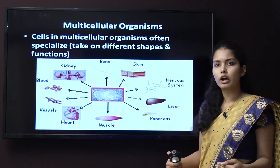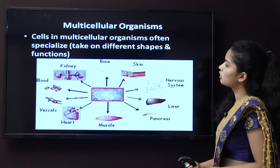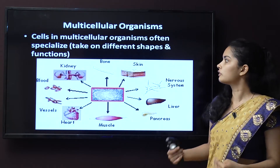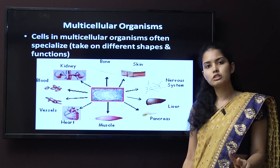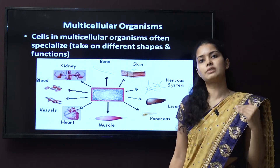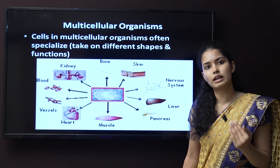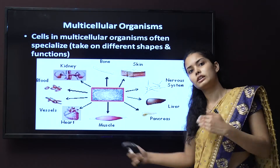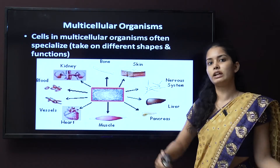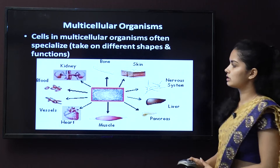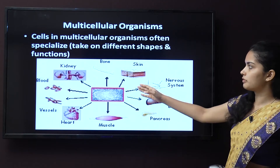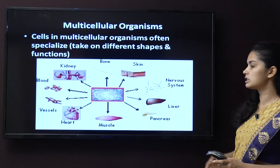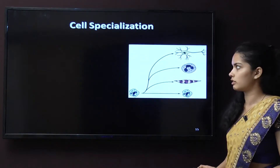In multicellular organisms, cells often specialize — they take on different shapes and functions. Multicellular organisms have more than one cell, so they have different types of cells, different in structure as well as function. As you can see, the cells can be of skin, bone, kidney, blood, heart, muscles, pancreas, liver, etc.